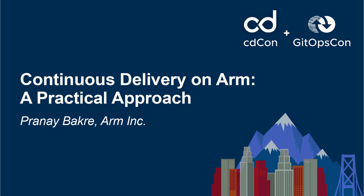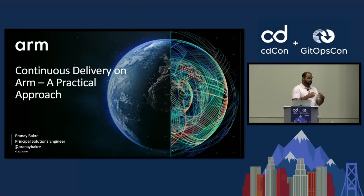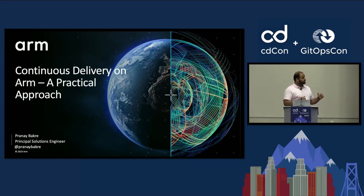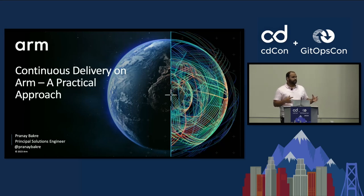Hey everyone. My name is Pranay Bhakri. I'm a principal solutions engineer at ARM. My primary job is to make sure that our partners — open source, closed source, etc. — can run their workloads and applications as seamlessly as possible and as highly efficiently and performantly as possible. I also help them build solutions in the ARM ecosystem.